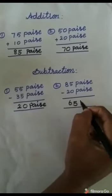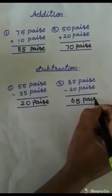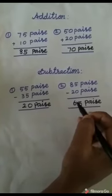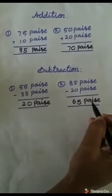Here write paisa, P-A-I-S-E, paisa. 85 paisa minus 20 paisa equals 65 paisa.